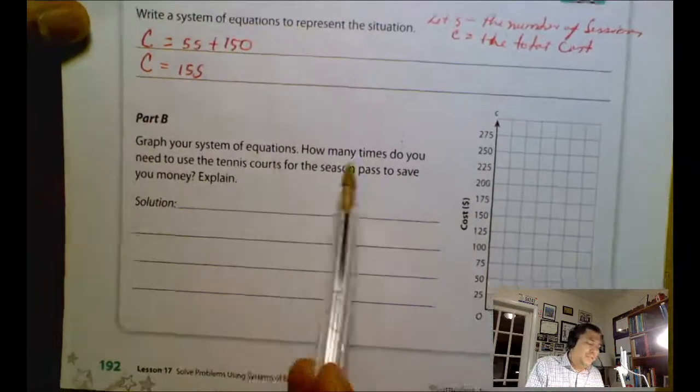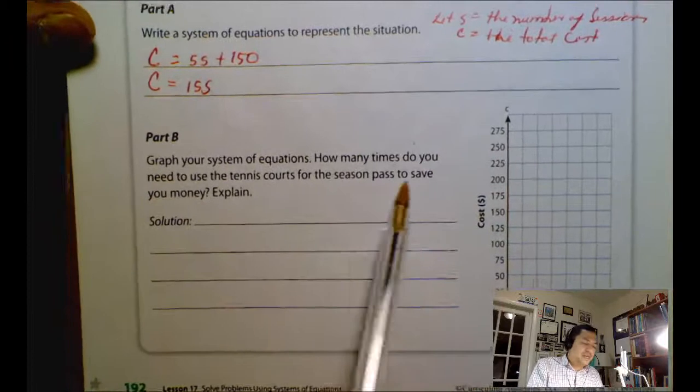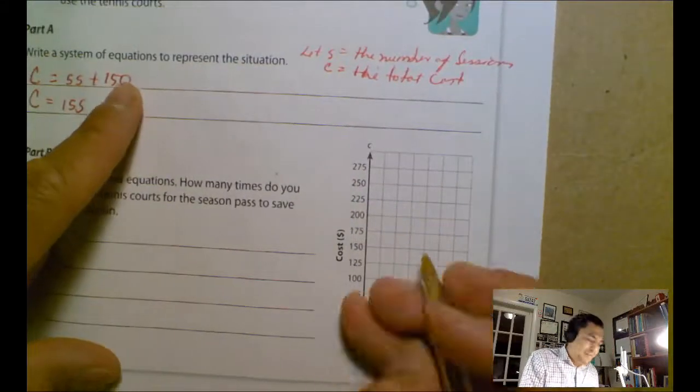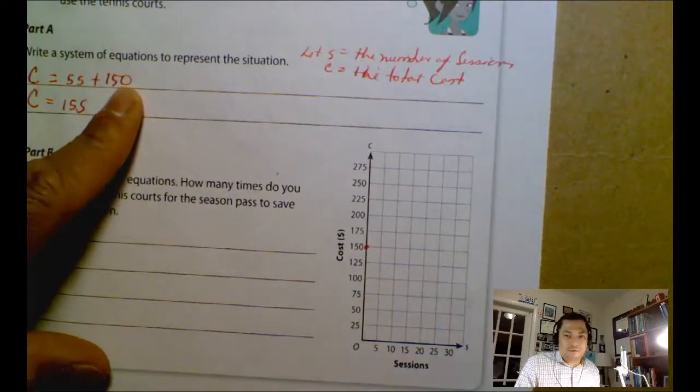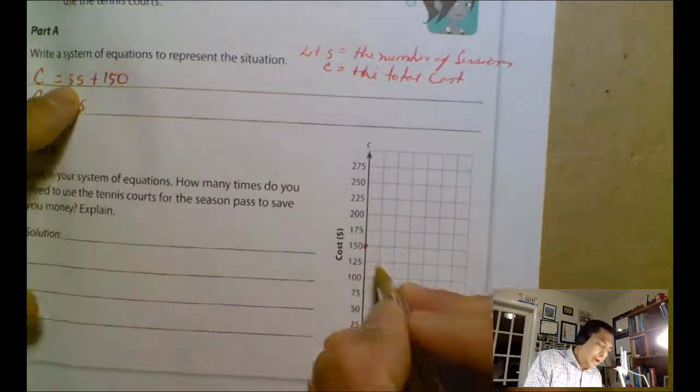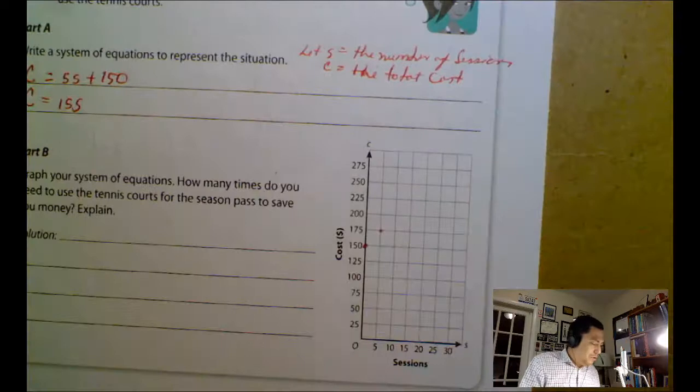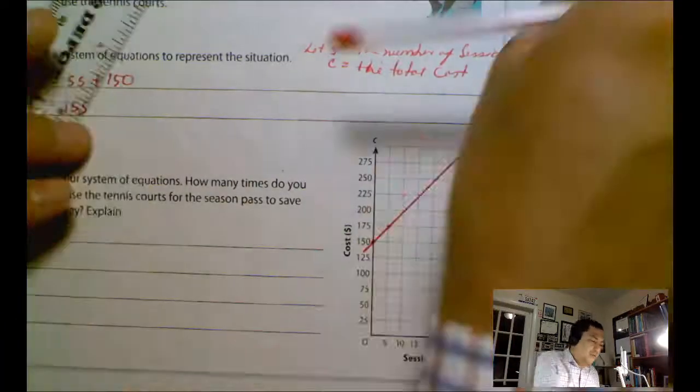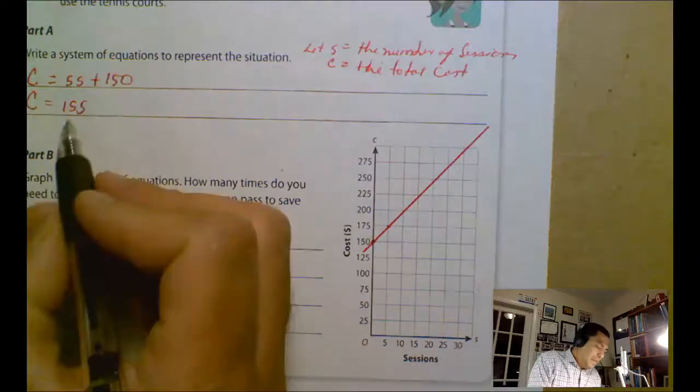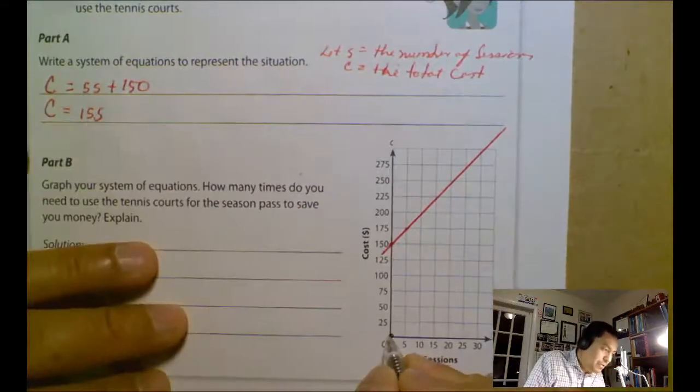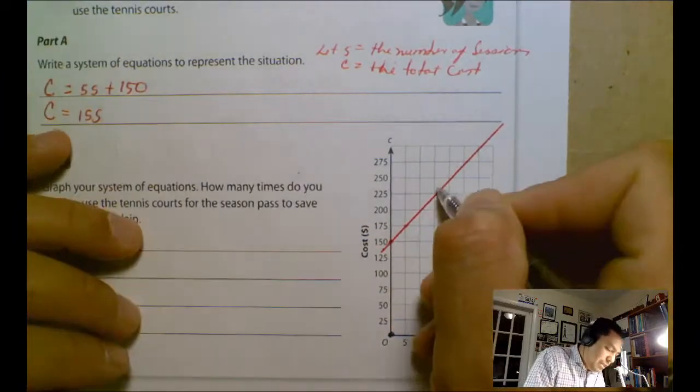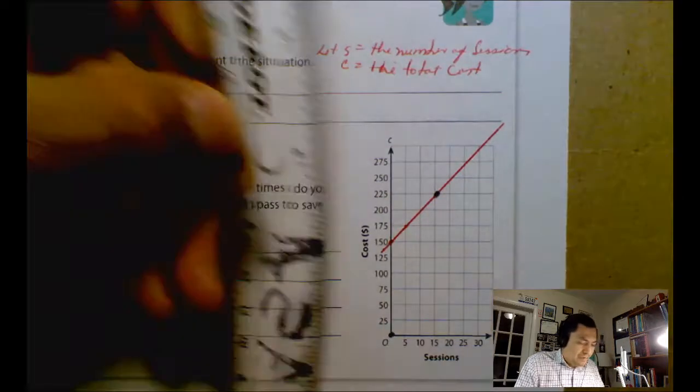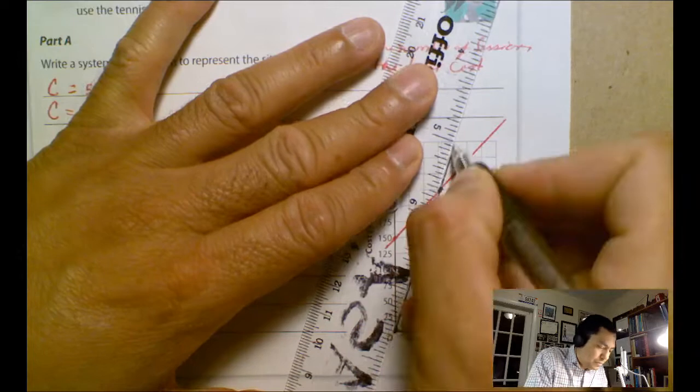Part B: Graph your system of equations. How many times do you need to use the tennis court for the season pass to save money? Explain. We need to graph. I'm going to graph the first one. Remember it's 150, and I'm going to just approximate that graph because they are big numbers. So I go five units up and one to the right. I'm going to have the second equation - it's got 15S with no y-intercept, that means it starts at zero. And I'm going to say they're going to intersect at this point. It's like going 15 then to the right one and then you go from there.